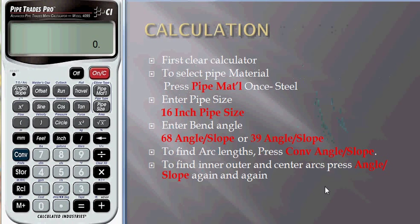First, before that, clear the calculator. Press Convert, press Inch so that the information stored in the calculator will be cleared. Press Pipe Material.